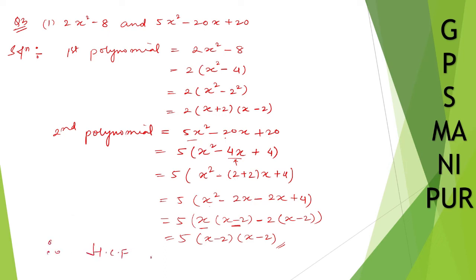Now in order to find the HCF, take what is common. So x minus 2 and x minus 2 — only these two are common, nothing else is common. So take x minus 2 once as common. This is your HCF.